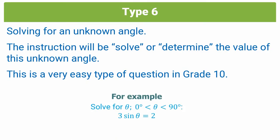Well, if you see the example I've put on the screen here, you're told to solve for θ, but you also are told that θ is between 0 and 90 degrees. This is what makes the Type 6 question quite easy in Grade 10.